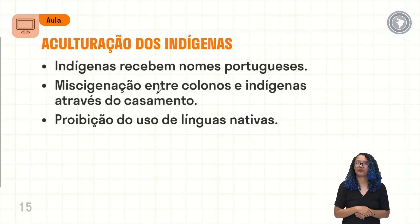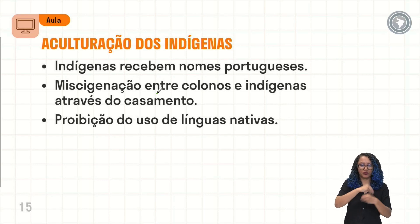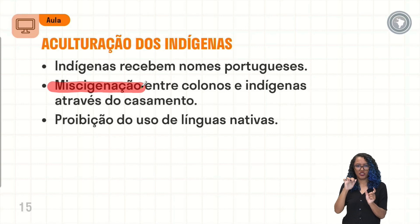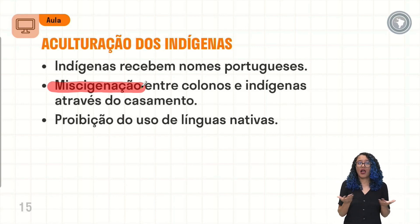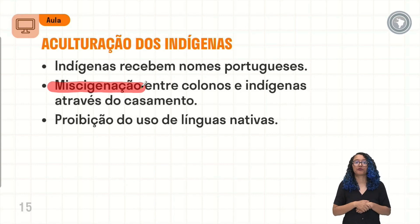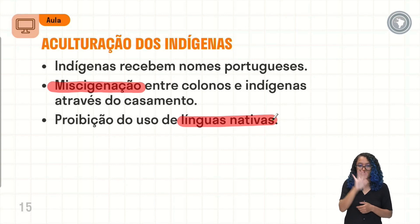A aculturação dos indígenas inclui também a adoção de nomes portugueses: com o batismo, os indígenas vão receber nomes como João, Maria, José. Haverá a miscigenação entre colonos e indígenas através do casamento — pessoas de grupos diferenciados contraindo matrimônio, e seus filhos vão dar origem a essa mistura de culturas. Haverá também a proibição do uso de línguas nativas e a adoção da língua geral como forma de comunicação oficial no território. Observem agora que nós trouxemos uma animação que vai tentar demonstrar esse processo de aculturação.